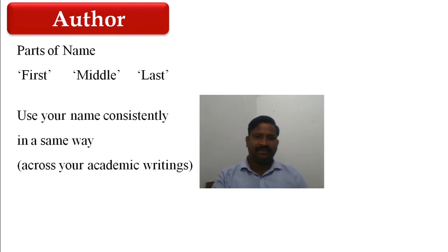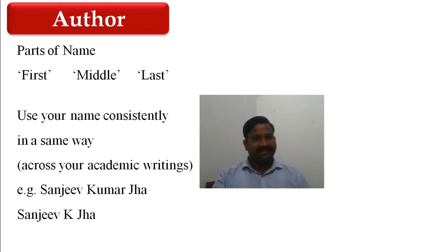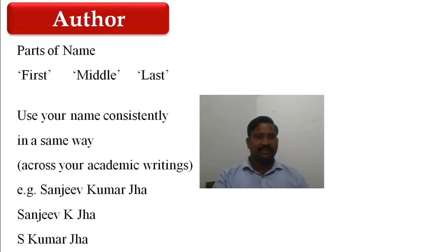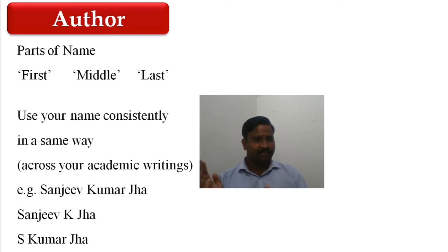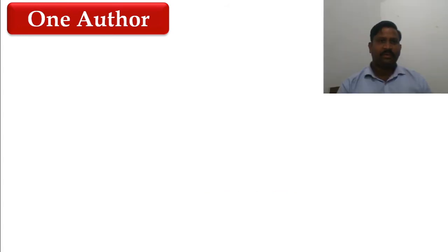For example, the name 'Sanjeev Kumar Jha' can be written as 'Sanjeev K. Jha' or as 'S. Kumar Jha.' These three variations will be considered as different names. So whatever way you are using, you should make it consistent.